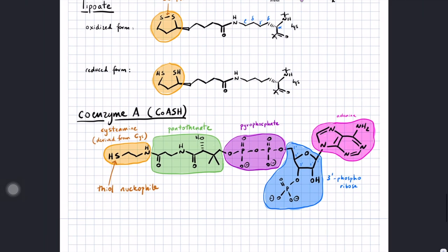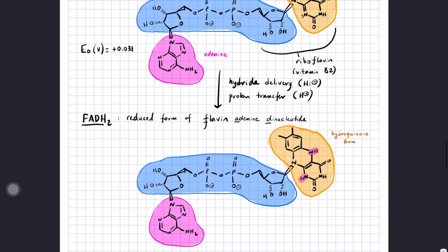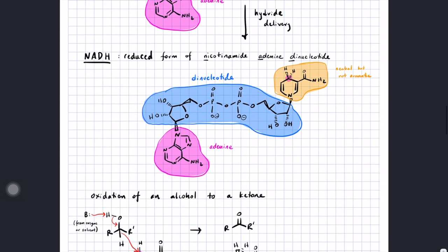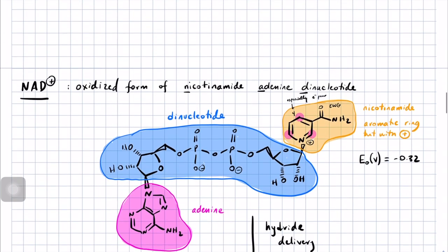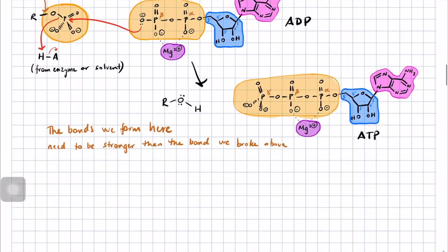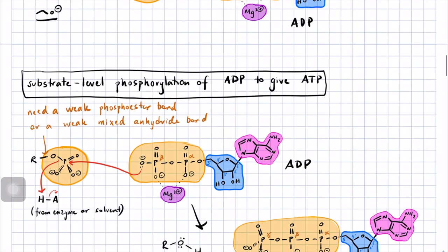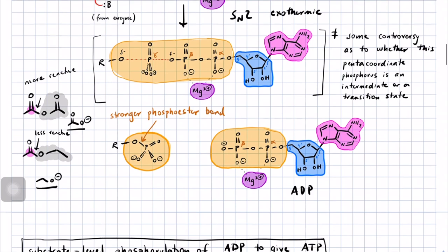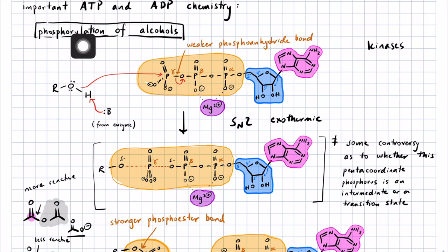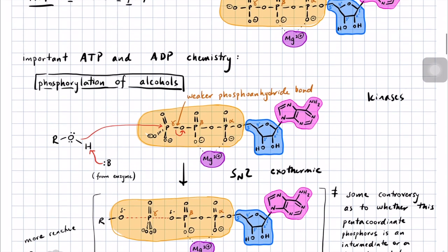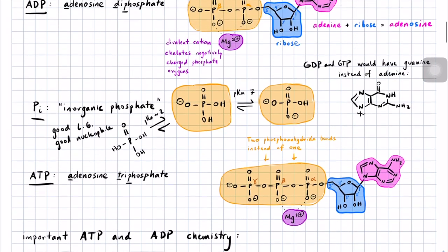That summarizes the types of molecules we will see in metabolism. When we talk next, we'll be talking about the reactions of glycolysis and the chemical logic behind each step. In some cases I will refer you back to mechanistic steps we've drawn here so we don't need to duplicate any effort. For example, the first step of glycolysis involves phosphorylation of an alcohol via a mechanism just like this.